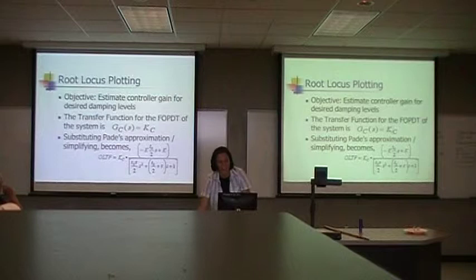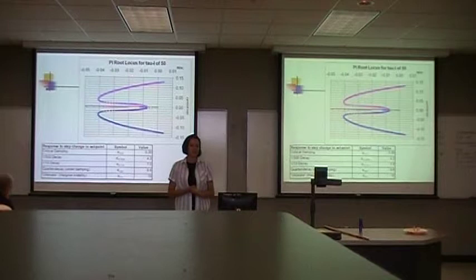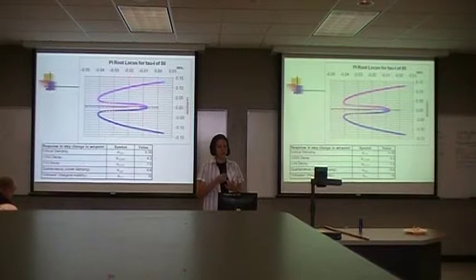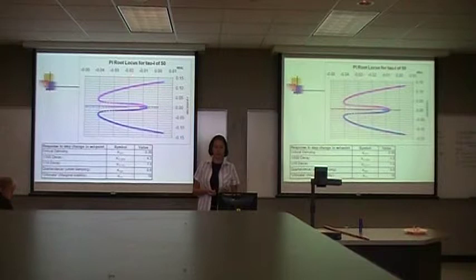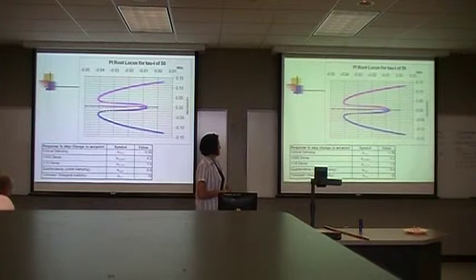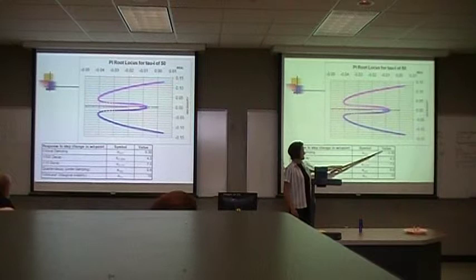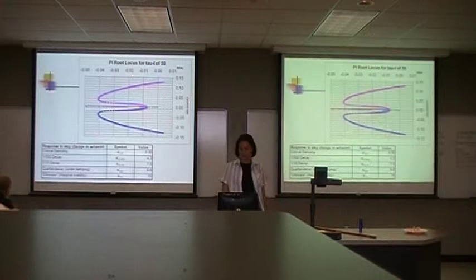This is a proportional-integral controller root locus plot for tau_i in my range of 50. You use the modeling to find different levels of decay: critical decay, 1/500th, 1/10th, quarter, and ultimate, which is more accessible. This axis is gain — it doesn't say gain, but it is. The higher you get, the more unstable the system becomes until it passes zero on the axis.